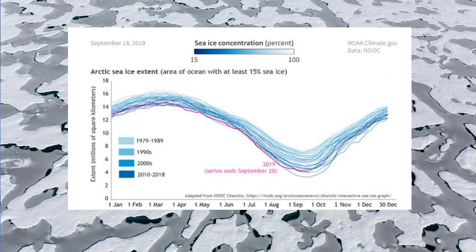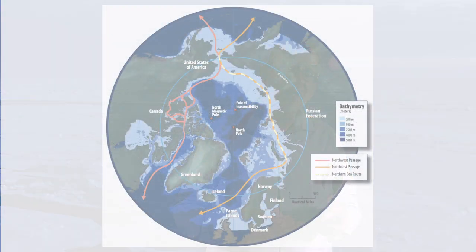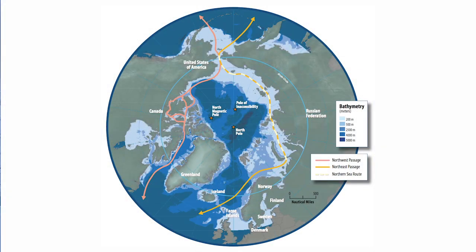The Arctic sea ice cover is shrinking in all seasons, most notably at the end of summer. Compared to where we were in the early 1980s, in September we've now lost about 40% of it. That has big impacts on ecosystems, but also on the accessibility of the Arctic — as we lose sea ice, it becomes more accessible to shipping and access to natural resources. The shrinking Arctic sea ice cover is a very big issue.